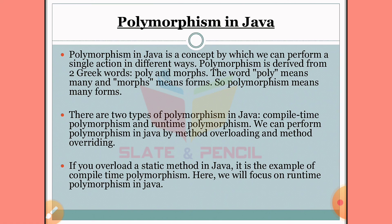There are two types of polymorphism in Java: compile-time polymorphism and runtime polymorphism.